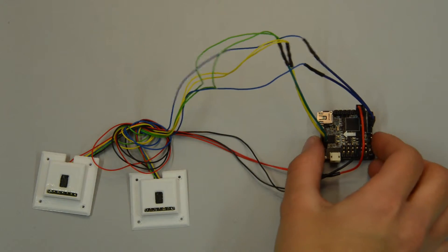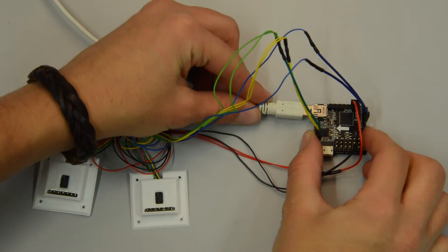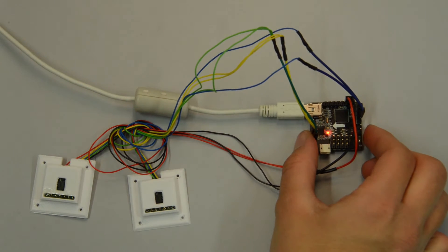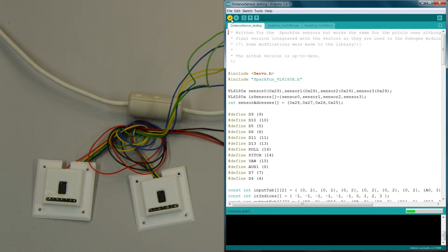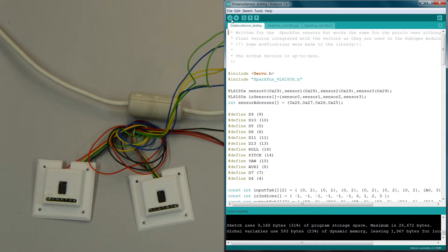Plug the microcontroller into the computer and open the Arduino IR sensor testing code. Compile and upload it, then open the serial monitor.